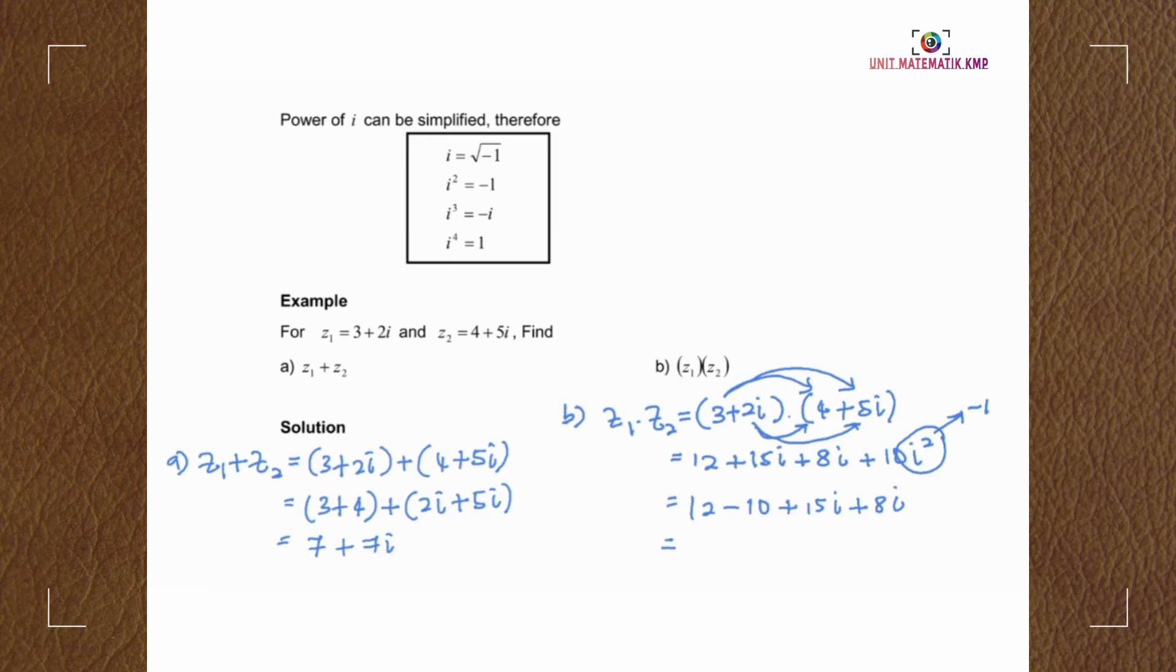So we add or subtract the same like terms. For the real part, we got 2, and for the imaginary part, we got 23i.